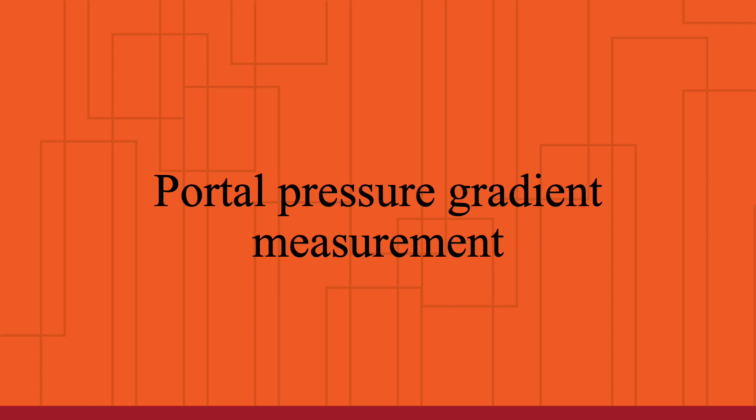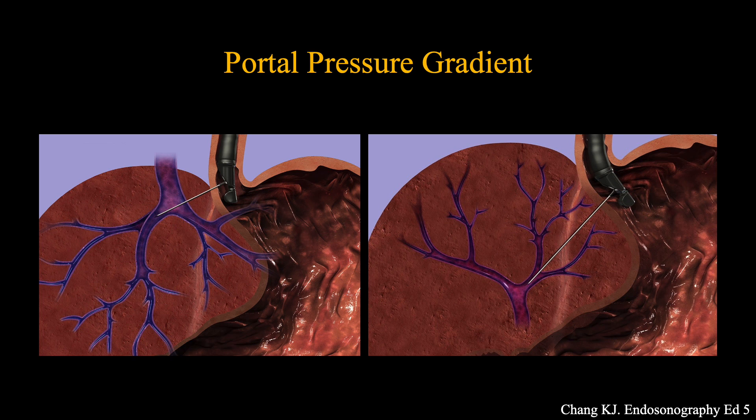Currently, hepatic vein pressure gradient is the gold standard for measuring portal pressures, as access to the portal vein is almost impossible for interventional radiologists. Therefore, in conditions with pre-sinusoidal or pre-hepatic portal hypertension, such as PBC, PSC, or malignancy, the hepatic vein pressure gradient can be misleading or inaccurate. However, at EUS, both the portal vein and the hepatic vein can be accessed successfully from the stomach with relative ease, and the portal pressure gradient can be measured very accurately.